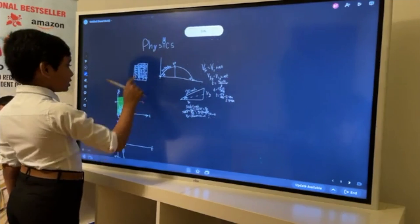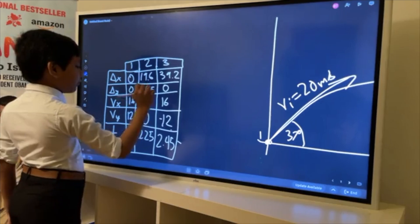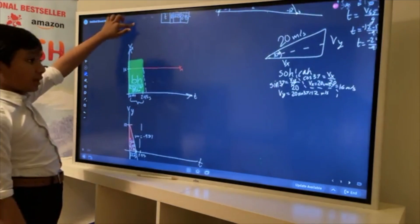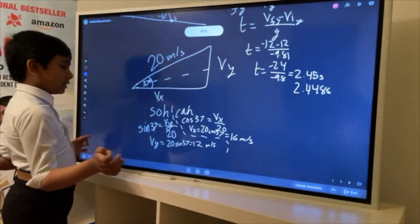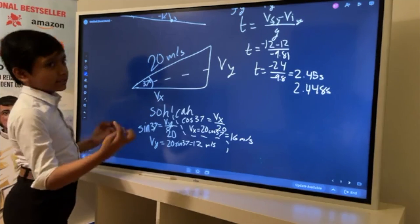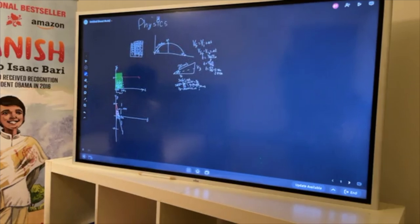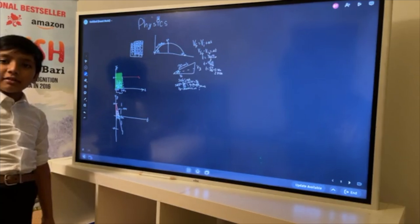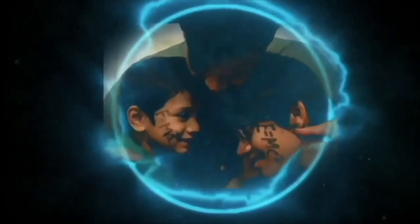This lets us find every single thing we need to know about the trajectory, but this time with a different approach and also an explanation of why everything is like sine 37, 20 sine 37, 20 cosine 37, all of that. This is the answer to our problem. Thank you everybody for watching, and we'll see you next time. Brought to you by brilliant.org, the Bari Science Lab, to fall in love with math and science.